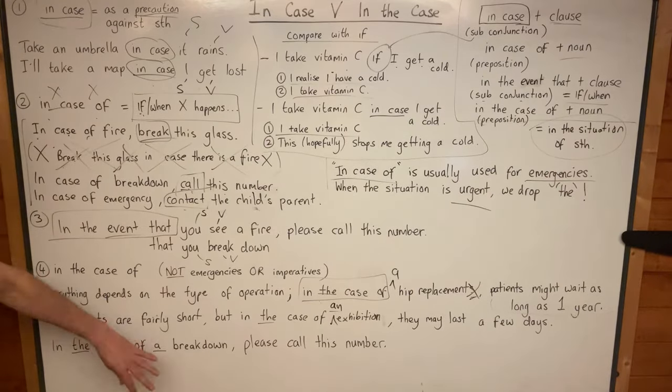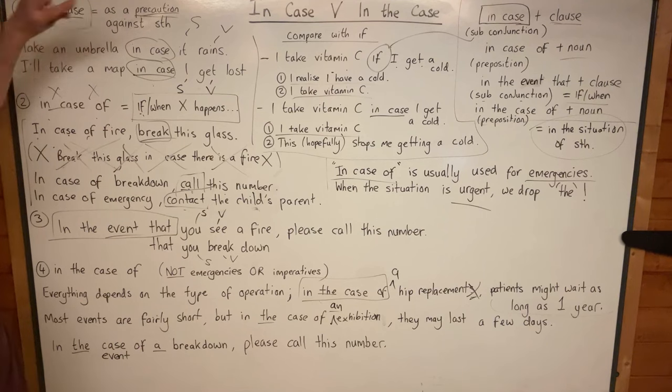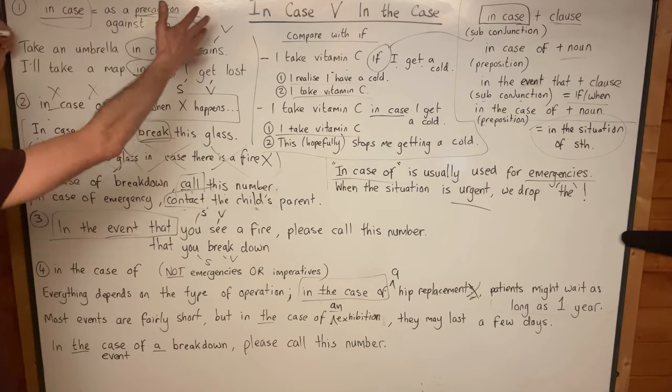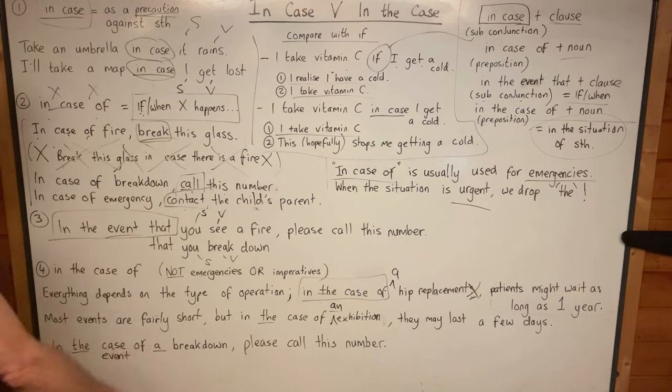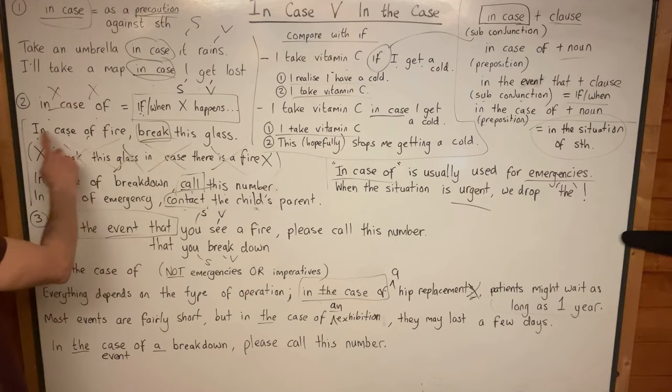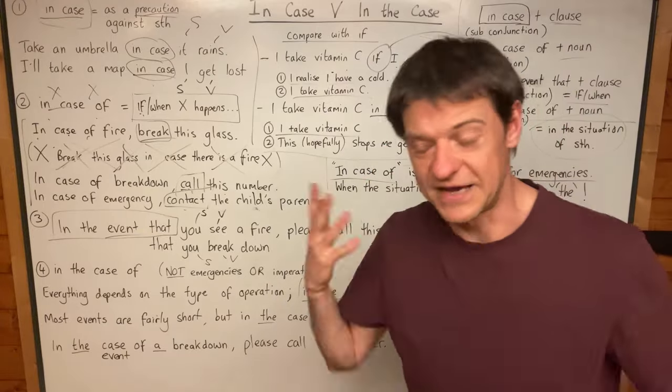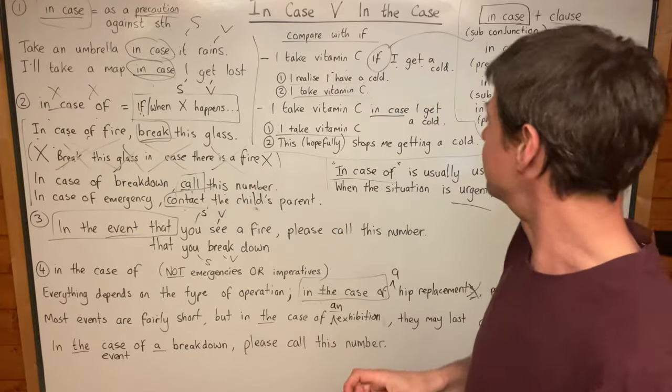But you can see that two, three and four are very different from the precautionary number one. That is different. And we do not mean, this number one is not the meaning of number two or number three. It's certainly not what we mean when we say, in case of fire, break this glass. It's not, to avoid a fire, break this glass. It's really not that, certainly not.